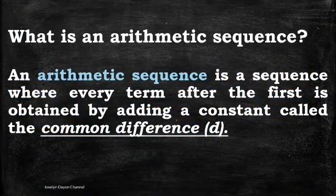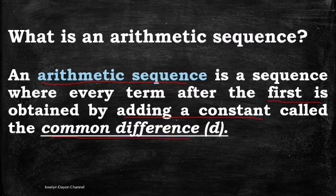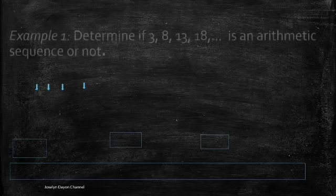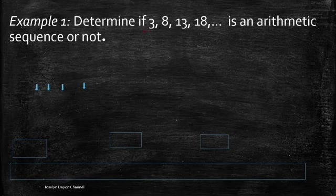An arithmetic sequence is a sequence where every term after the first is obtained by adding a constant number, and that constant is what we call the common difference. Now let's have the first example: determine if 3, 8, 13, 18 is an arithmetic sequence or not.